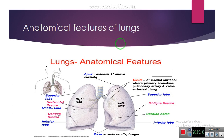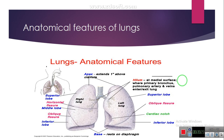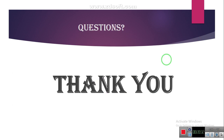This is the anatomical features diagram of the lungs, showing the apex, right lung, left lung, base, superior lobe, middle lobe, inferior lobe, horizontal fissure, oblique fissure, and cardiac notch. The base rests on the diaphragm. Thank you, this is all about the lungs and the respiratory system. If you have any questions, you can ask me through the WhatsApp group.